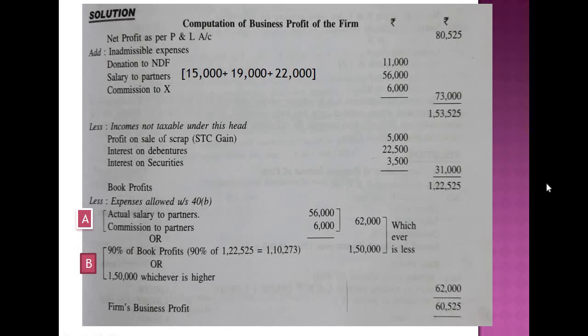In the computation of business profit, we take the net profit as per the profit and loss account which is 80,525. We add the inadmissible expenses: donation to NDF, salary to partners totalling 56,000, and commission to X of 6,000, giving 1,53,525. We then deduct income not taxable under this head — the short-term capital gain on sale of scrap machinery, interest on debentures, and interest on security — arriving at a book profit of rupees 1,22,525.